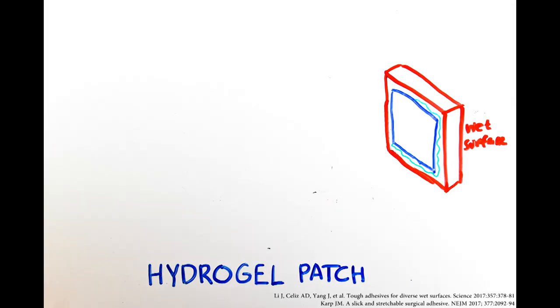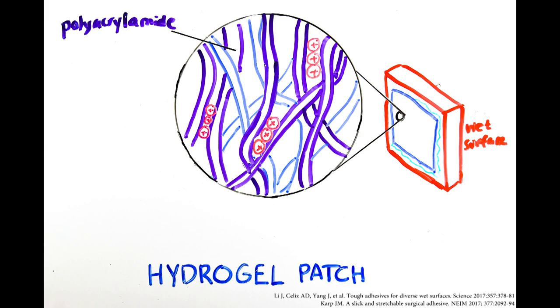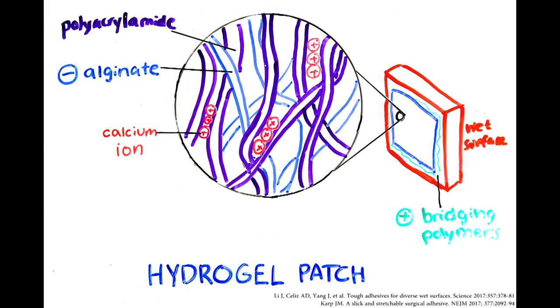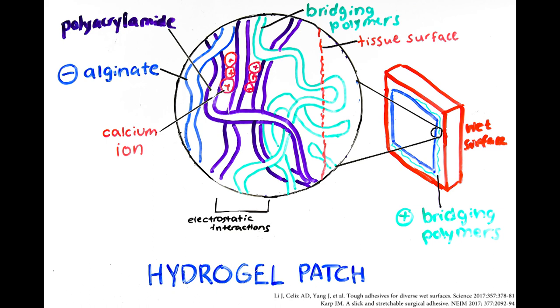The hydrogel mimics the properties and charges of slug slime with polyacrylamide, calcium ions, negatively charged alginate, and positively charged bridging polymers. Electrostatic interactions pull the hydrogel into the tissue surface, where it can then physically entangle with the permeable surface and form covalent bonds.